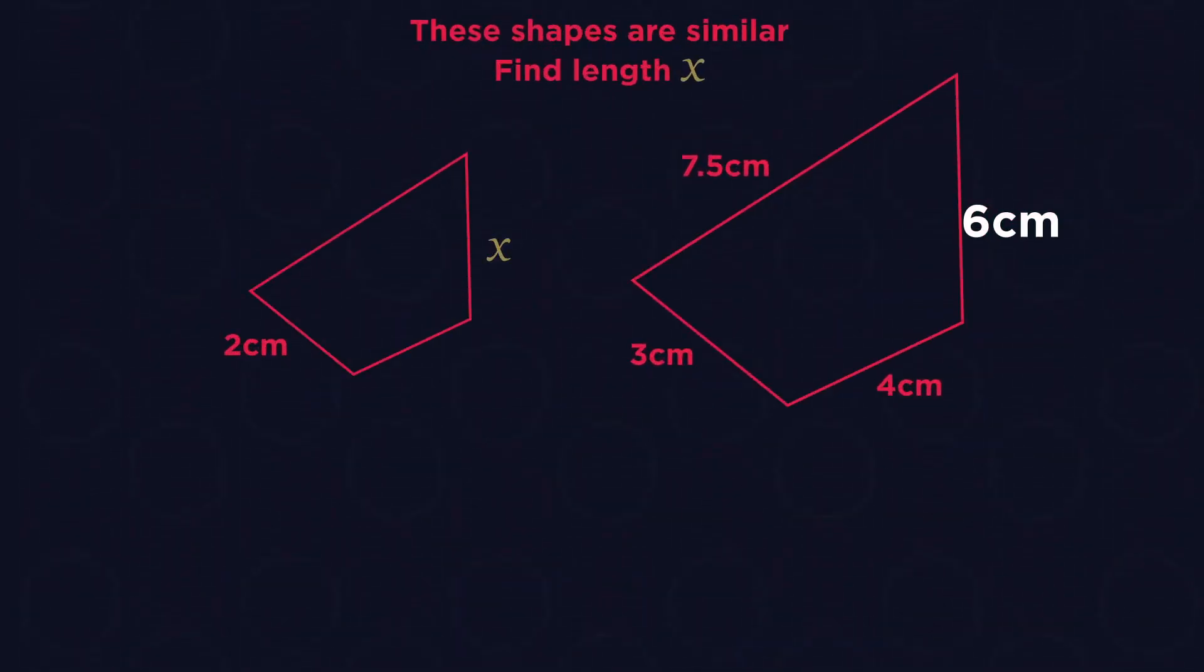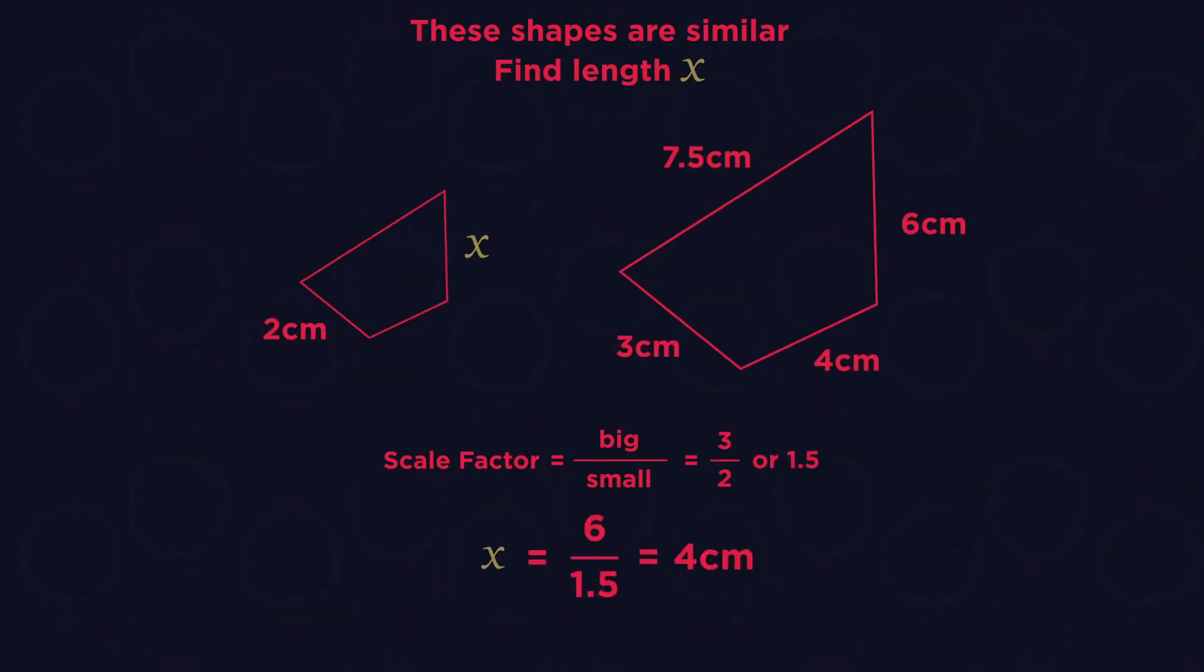What if we are given this bigger length and are missing a smaller length? Just divide. Find the scale factor first. Then 6 divided by 1.5 will give us the smaller length of 4cm.